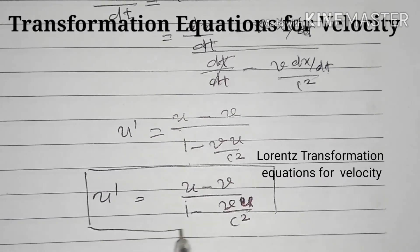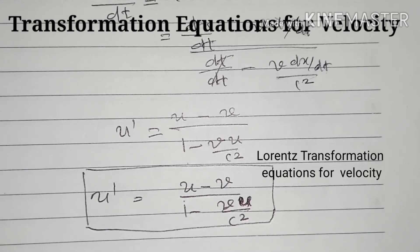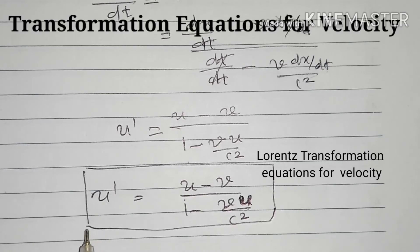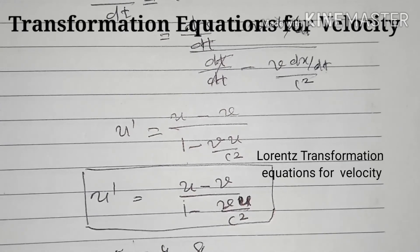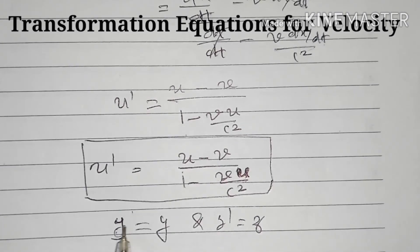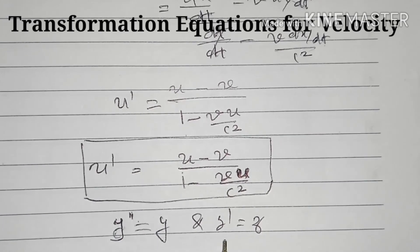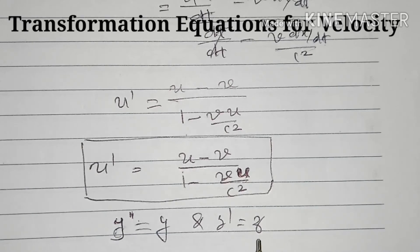This equation is called the Lorentz Transformation Equation for velocity in the X direction. For the velocity in the Y and Z directions, since Y dash equals Y and Z dash equals Z, the velocity components in the Y and Z directions are the same in both frames.